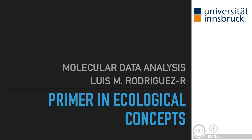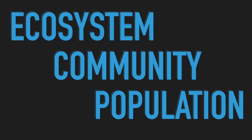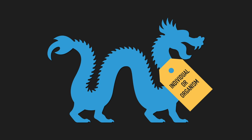So let's begin by defining three key concepts in ecology: ecosystem, community, and population. We will begin by imagining a dragon. A single dragon is called an individual, or an organism. For many biologists, including many ecologists, the individual is the fundamental biological unit.